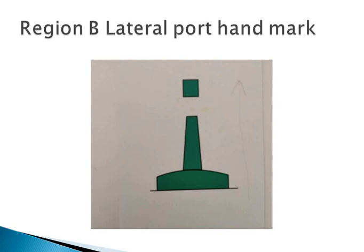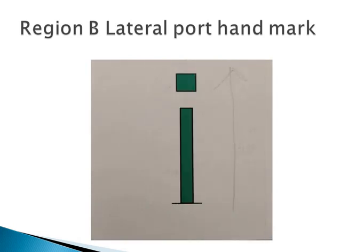Sprite can indicates Region B. So this is Region B lateral port hand mark: color green, top mark single green can, light green, rhythm any other than composite group flashing 2+1.